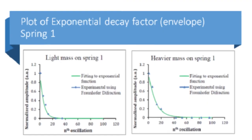The dots here are the data we collected and the line is the exponential function fitted to the experimental data. The vertical axis is the normalized amplitude of oscillation — the ratio of each amplitude divided by the initial amplitude — while the horizontal axis represents the number of oscillations. By varying the spring and mass, we evaluate the effect of spring constant and mass on the exponential decay factor, which is lower for the heavier mass.